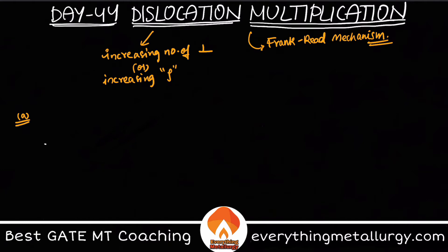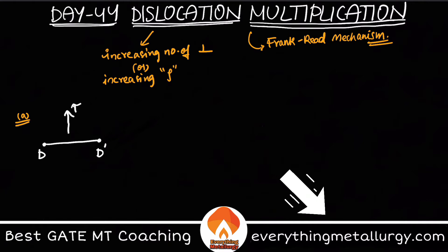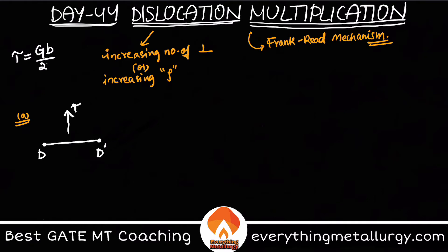Let's say I have a dislocation line D-D'. I apply some shear stress tau to this dislocation. We know that if a required amount of stress is applied on a dislocation it can actually bend, and the shear stress tau is equal to Gb divided by 2r.